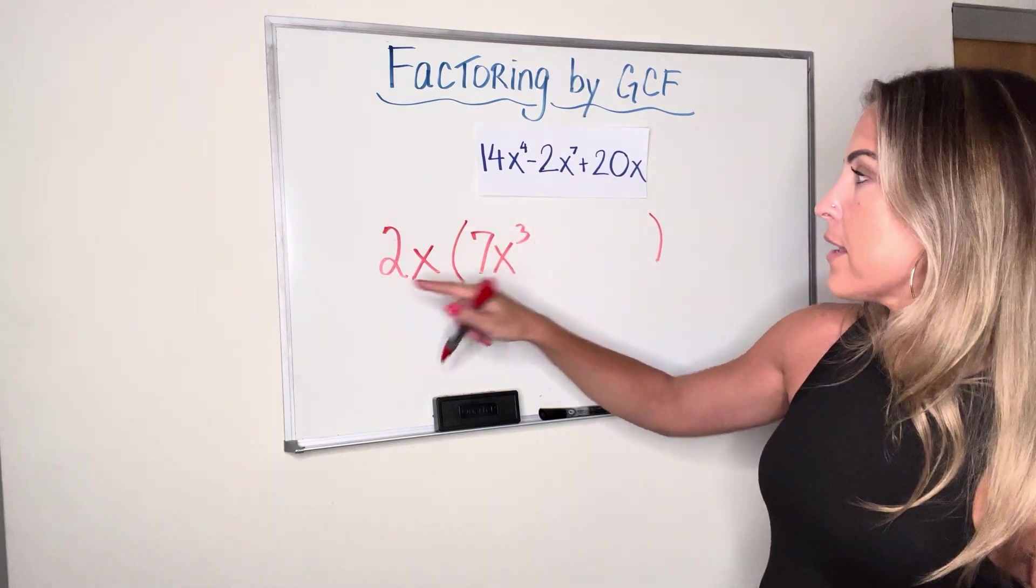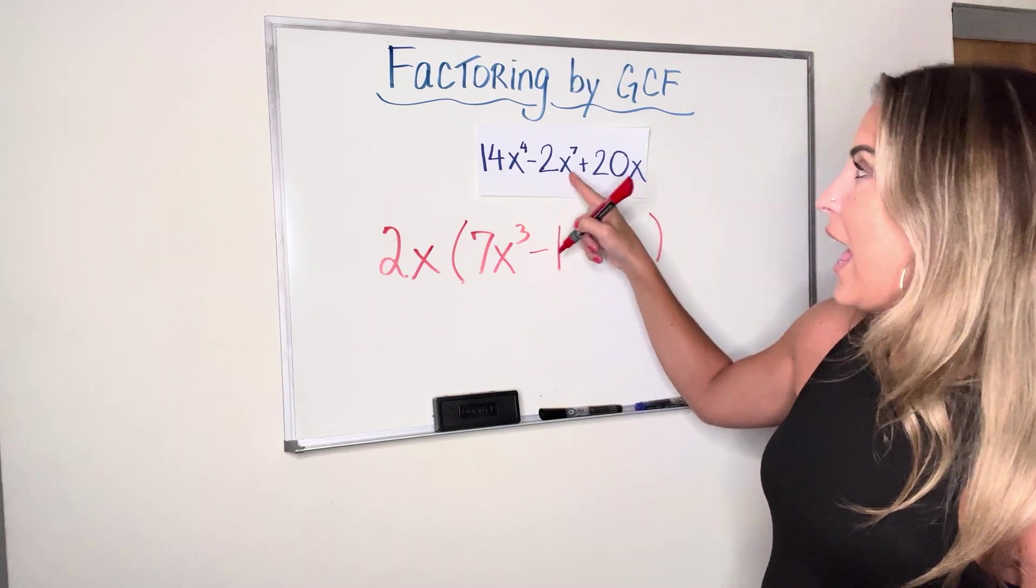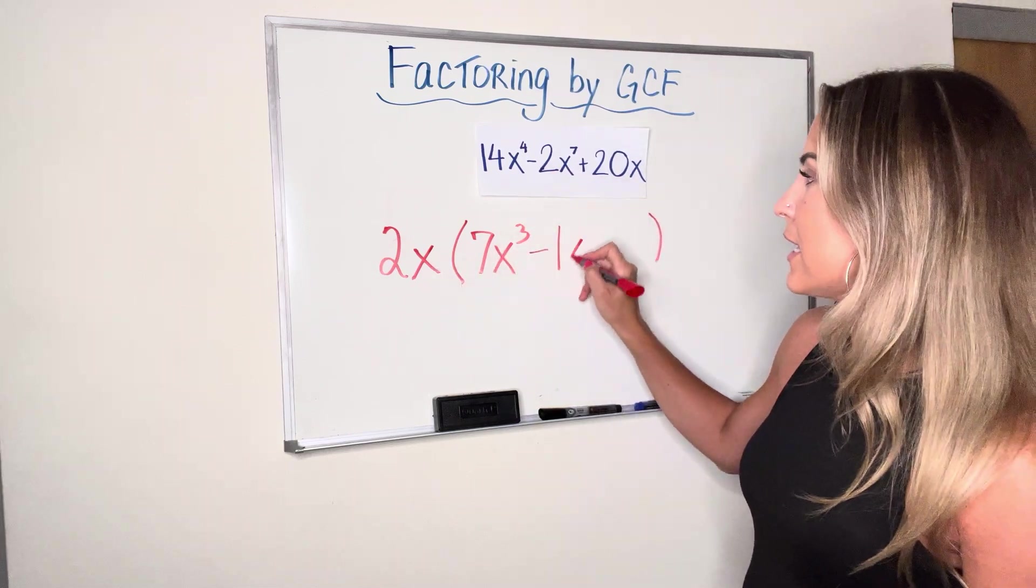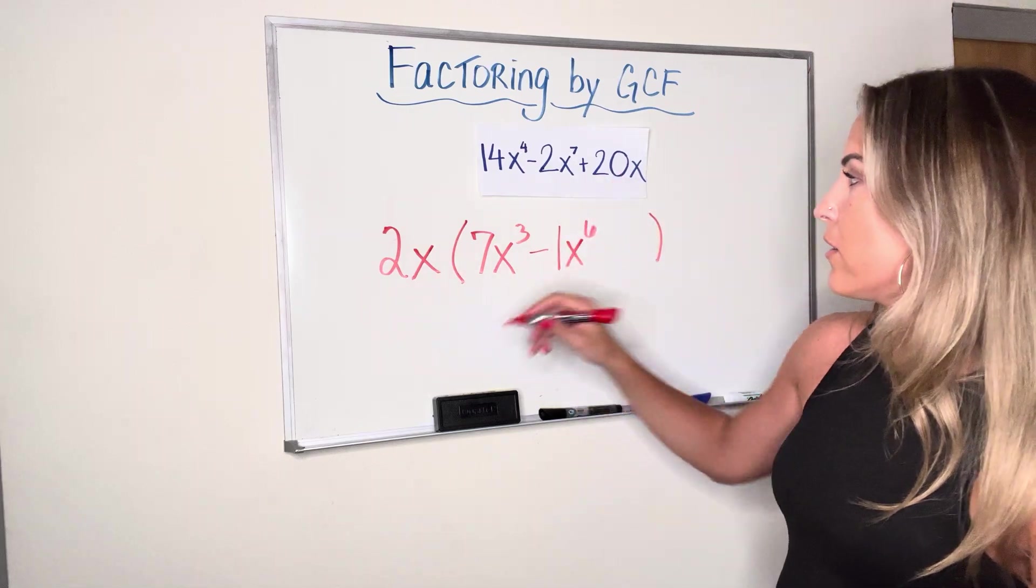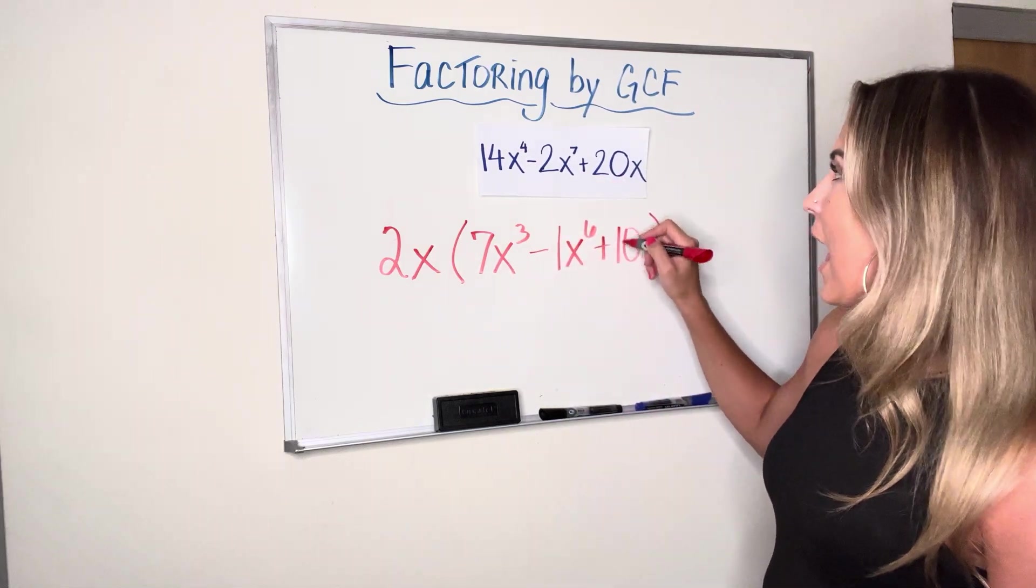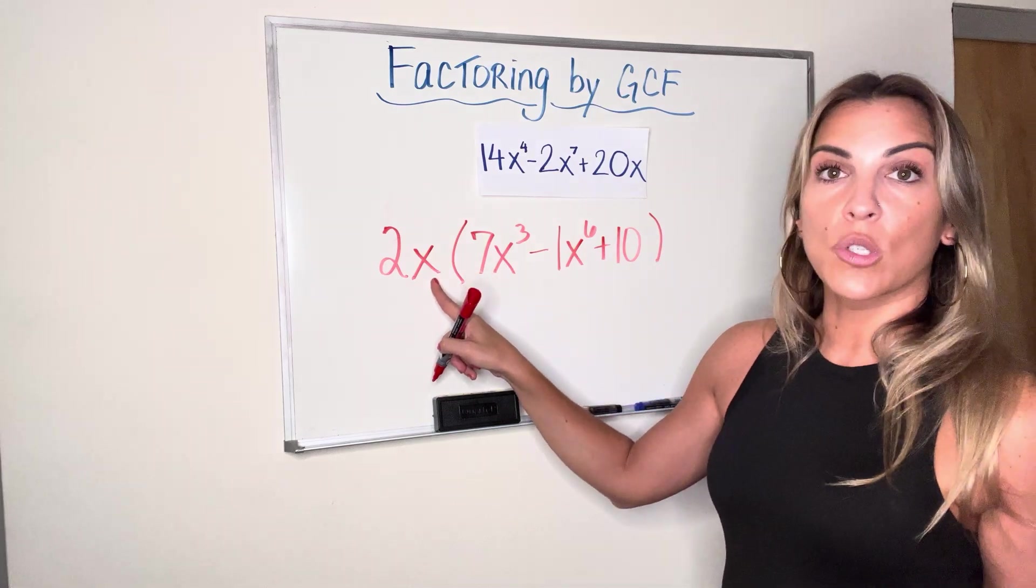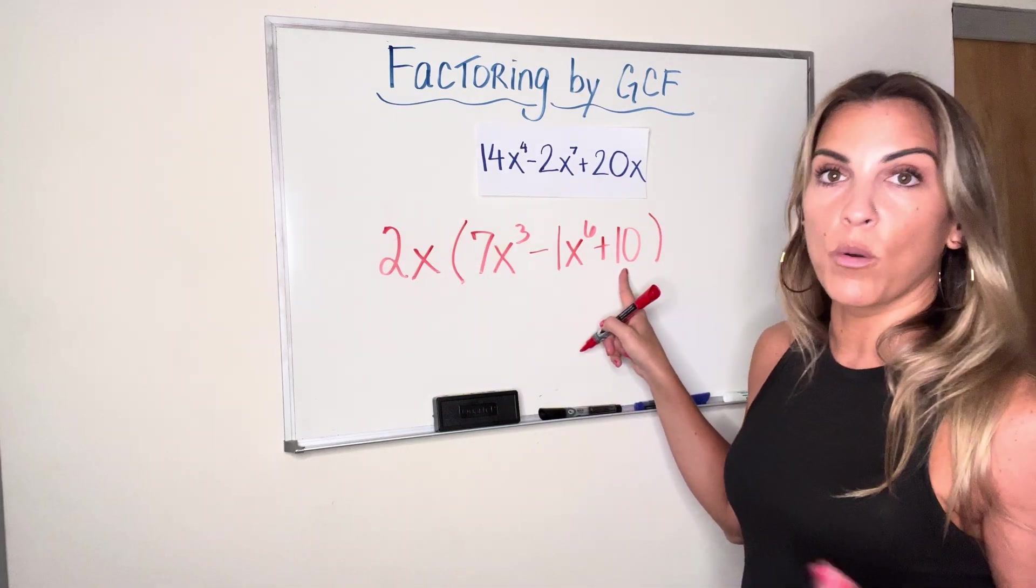Next one, negative 2 divided by positive 2 is negative 1. x to the seventh divided by x is x to the sixth. And last term, 20 divided by 2 is positive 10. And x divided by x is just 1. So I don't need it because 10 times 1 would just be 10.